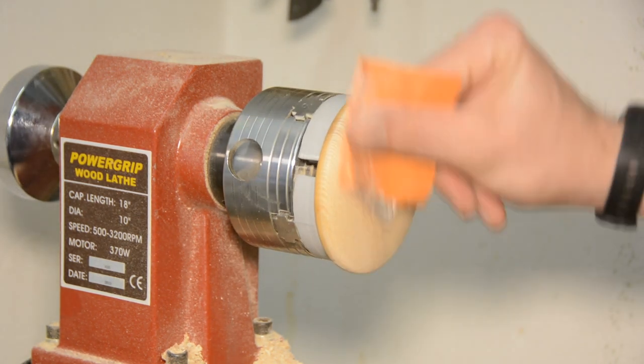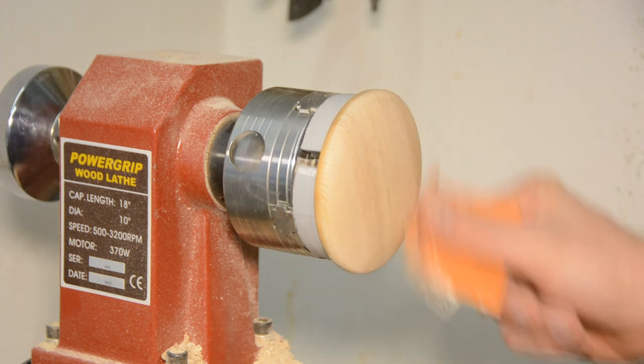After sanding the surface to 320 grit, the lid gets a coat of hot oil.